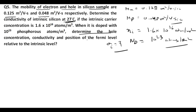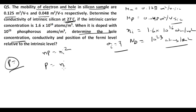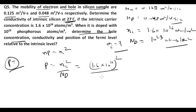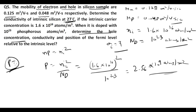First, determine the hole concentration. We know that np = ni², therefore p = ni²/Nd. So p = (1.6 × 10¹⁶)²/10²³. On solving, the hole concentration p = 2.56 × 10⁹ atoms/m³.